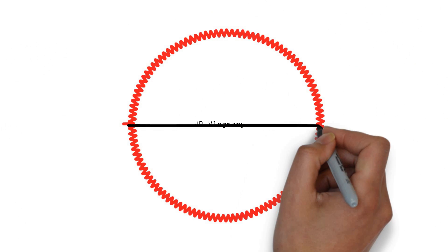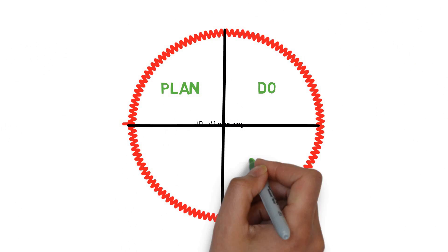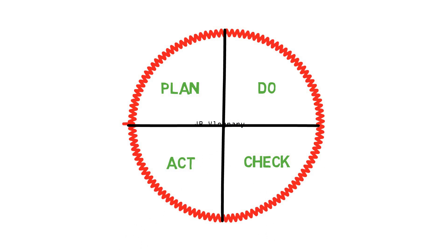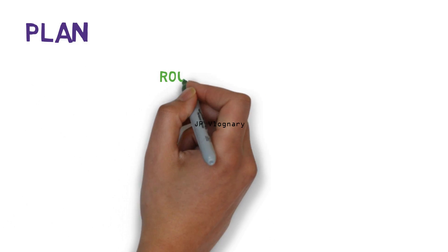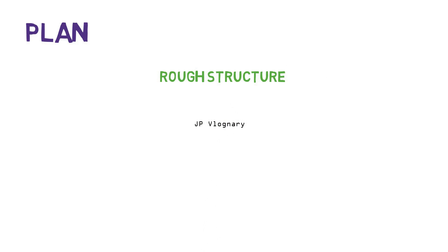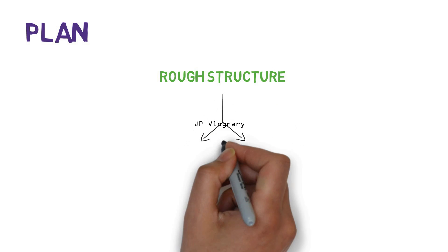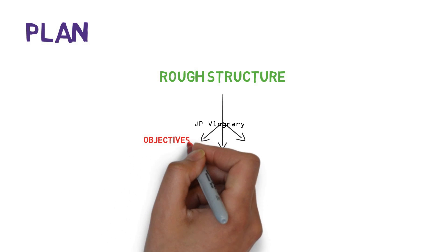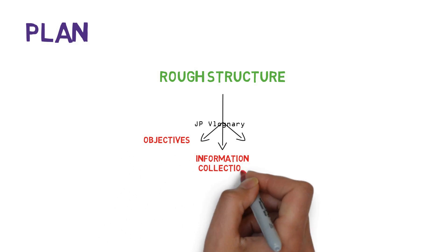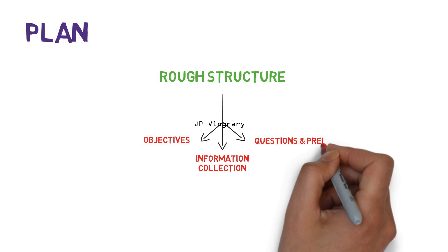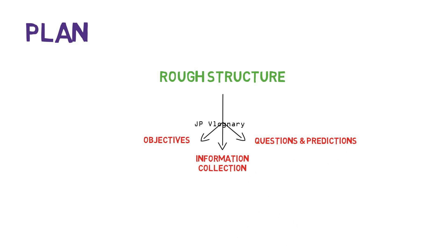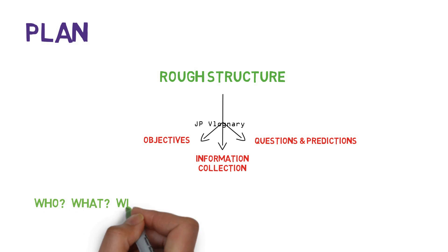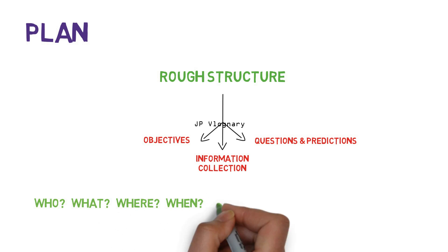This concept is a cycle for quality management and problem solving, including Plan, Do, Check, and Act. The Plan phase involves making a rough structure of your project. Three basic things are important: defining the objectives, information collection, and placing predictions. You have to ask questions — who, what, where, and when — and find their answers.